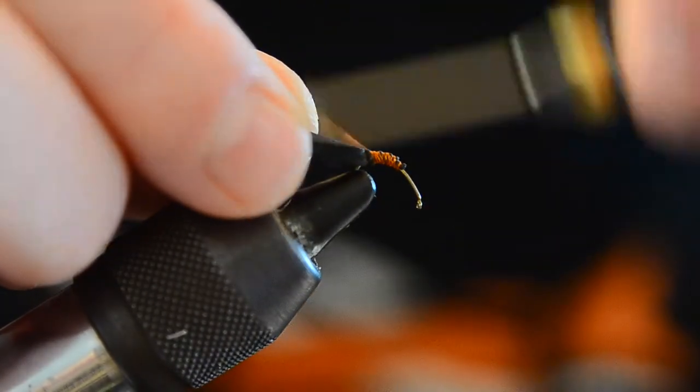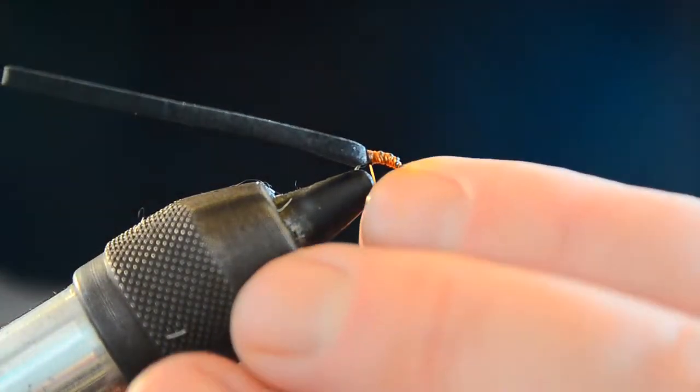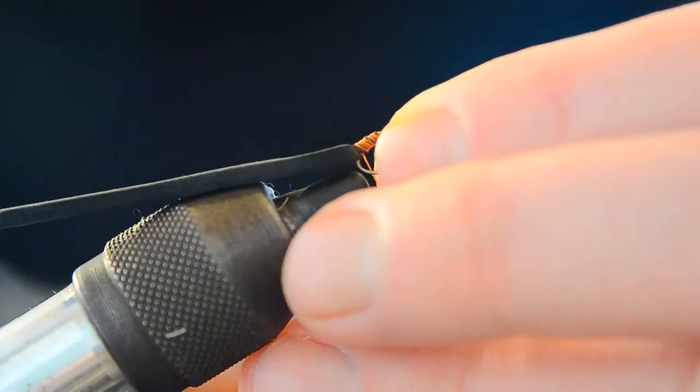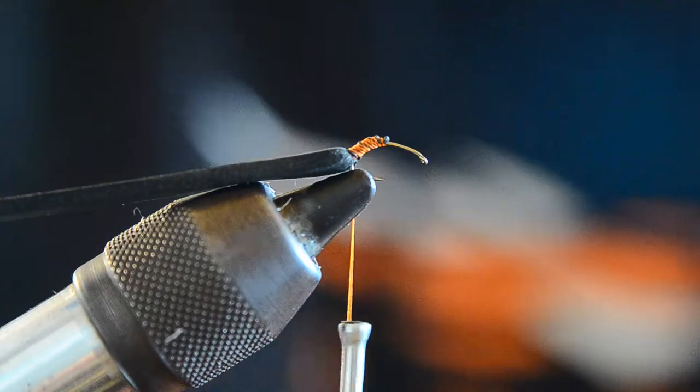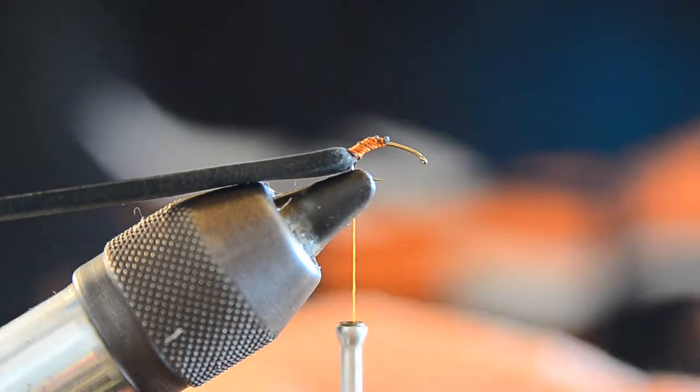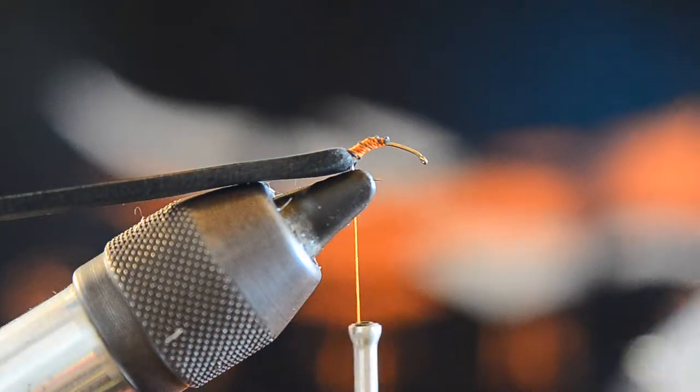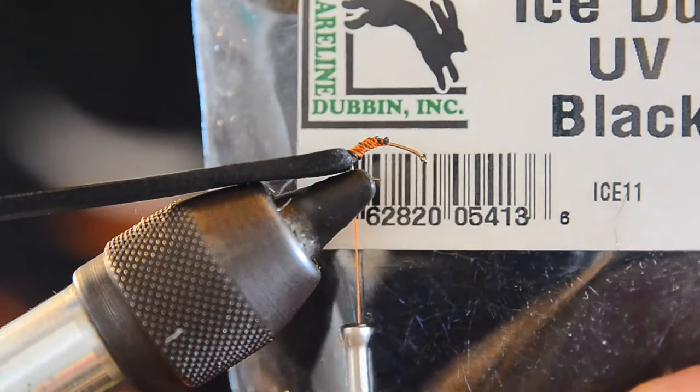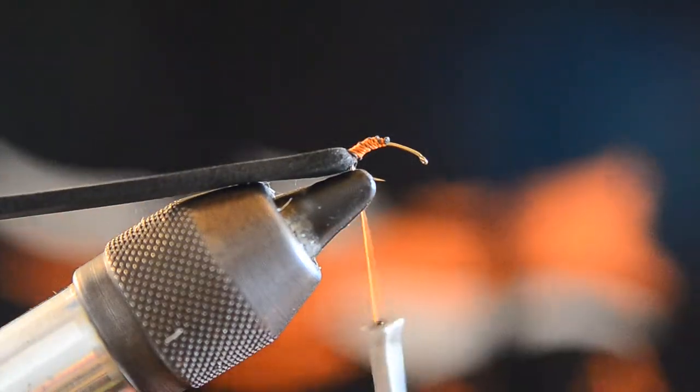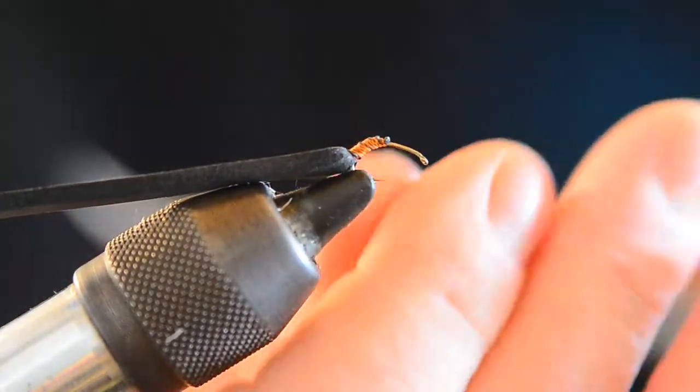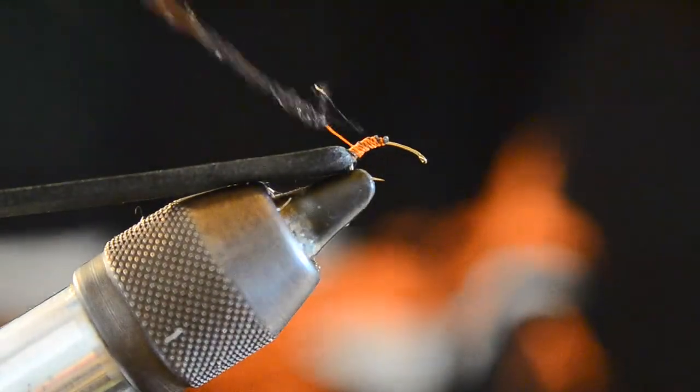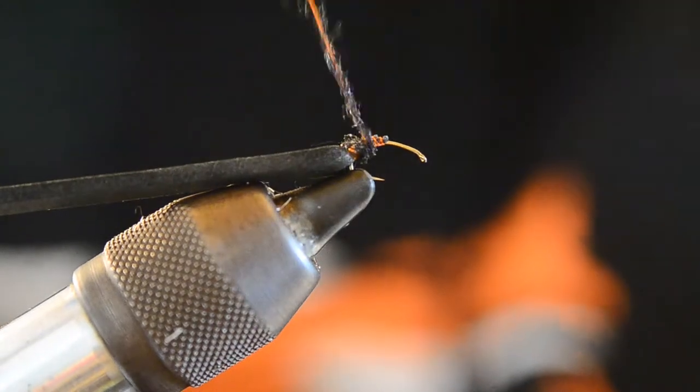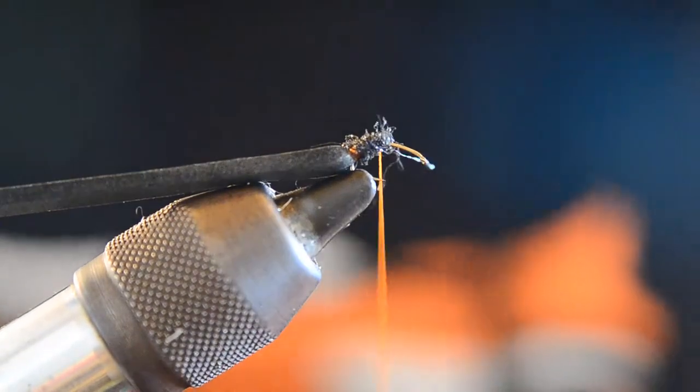Clean it up a little bit. Once I get to this point, I'll just take and pull the hook out and reposition it in the vise. For the body, just a little bit of black UV ice dub. This fly is really easy to tie and it floats very well. It is really easy to see, all the things that we typically like in a good fly.